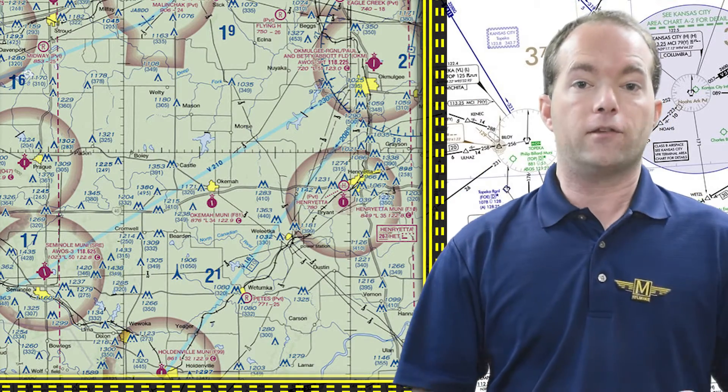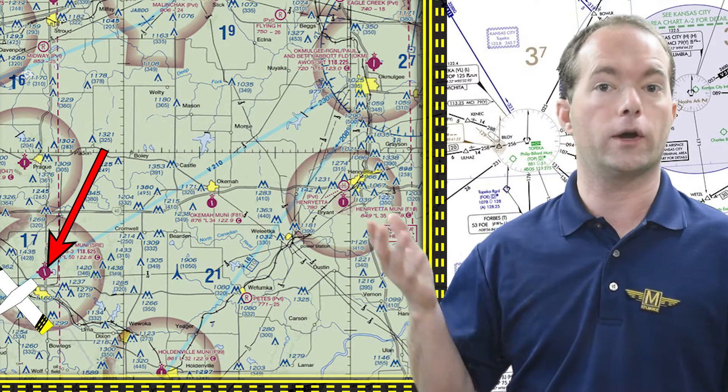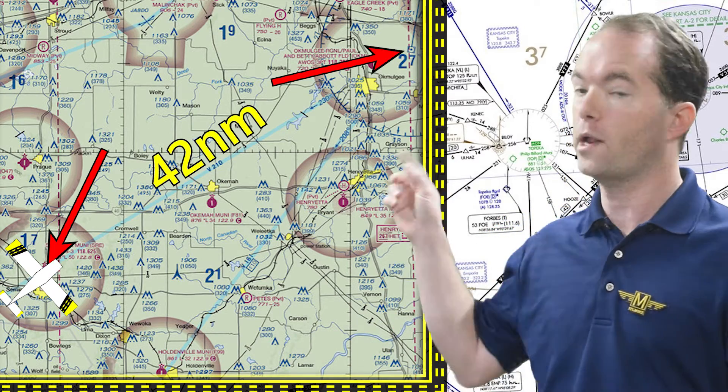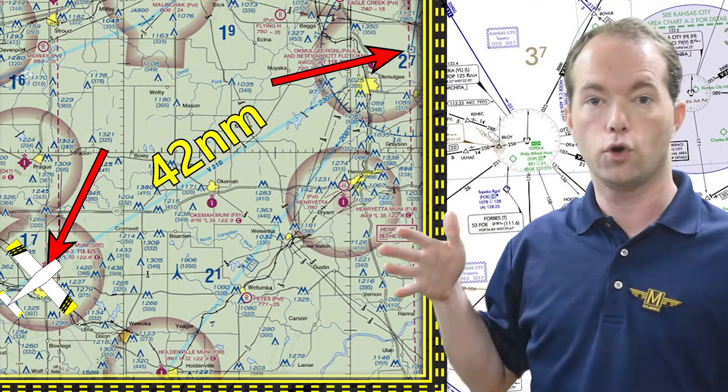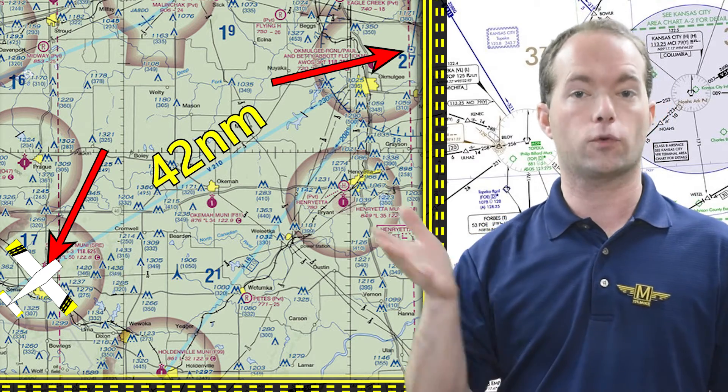If you can't do any of those things above, you may also find a prominent ground feature along an airway, preferably at least 20 miles from the VOR. You can maneuver over that spot and then check the radial that way.